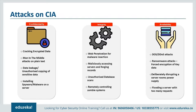Next is integrity — maintaining the consistency, accuracy, and trustworthiness of data over its entire lifecycle. Data must not be changed in transit and steps must be taken to ensure data cannot be altered by unauthorized people. These measures include file permissions and user access controls. Version control may be used to prevent erroneous changes or accidental deletion by authorized users. Some data might include checksums, even cryptographic checksums, for verification of integrity. Backups or redundancies must be available to restore affected data to its correct state.